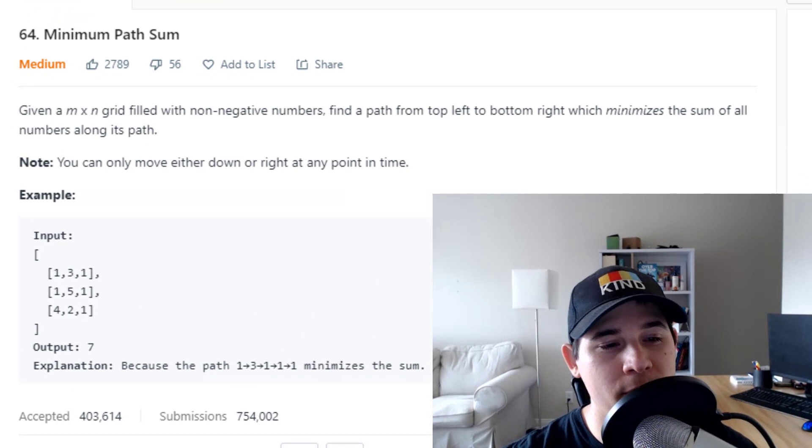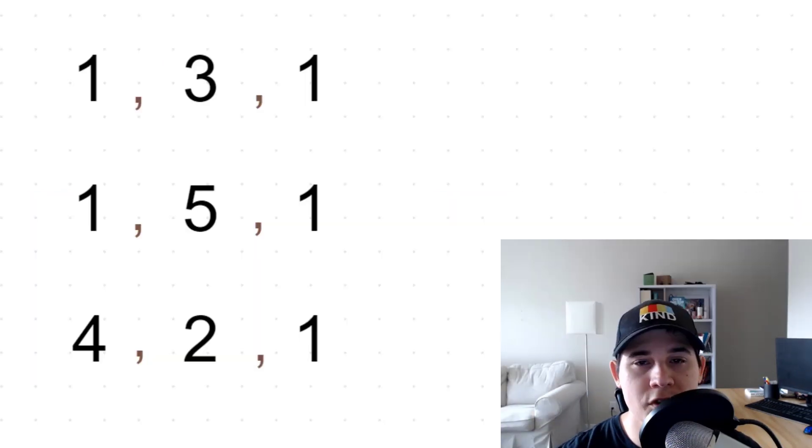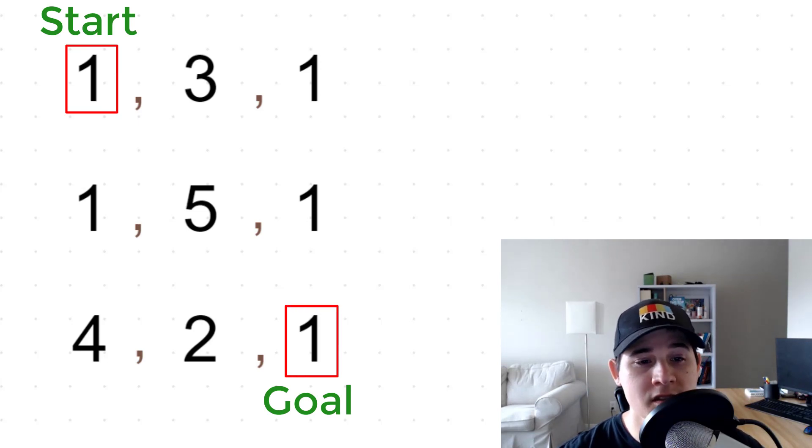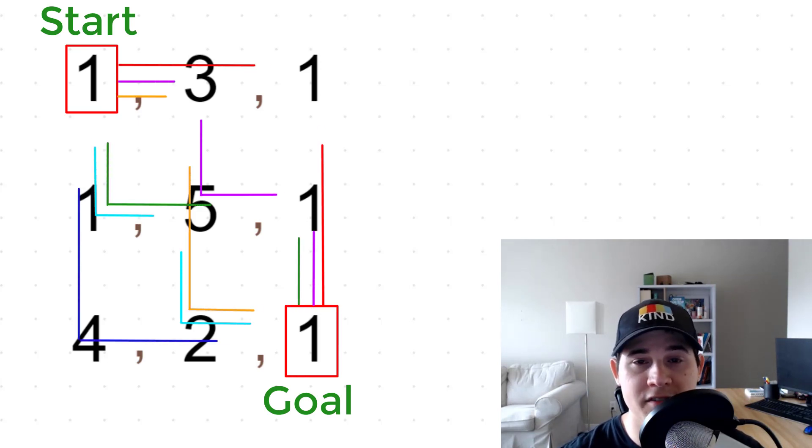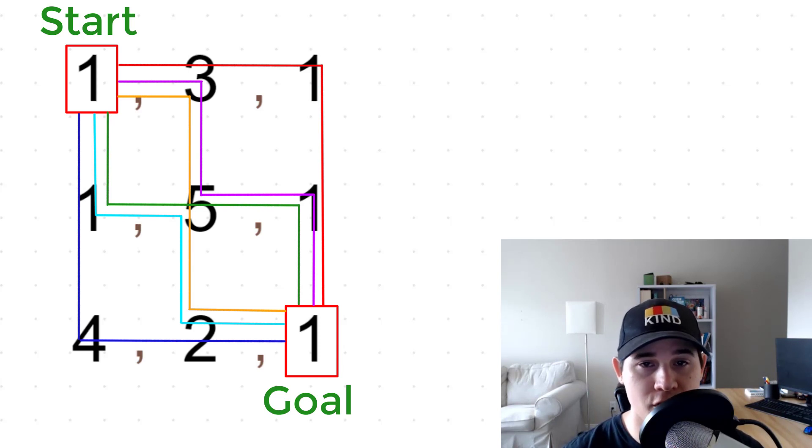So our description says, given an M by N grid filled with non-negative numbers, find a path from top left to bottom right, which minimizes the sum of all numbers along its path. Note, you can only move either down or right at any point in time. So for this problem, we need to find the shortest path from the top left cell to the bottom right cell. And in this case, we have many different paths that we can take to get from that top left to bottom right position.